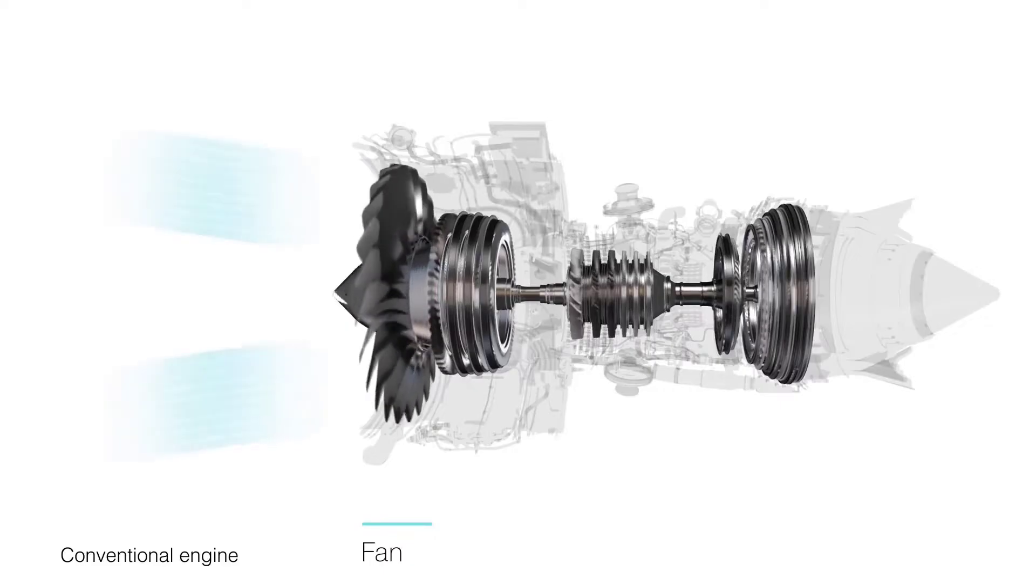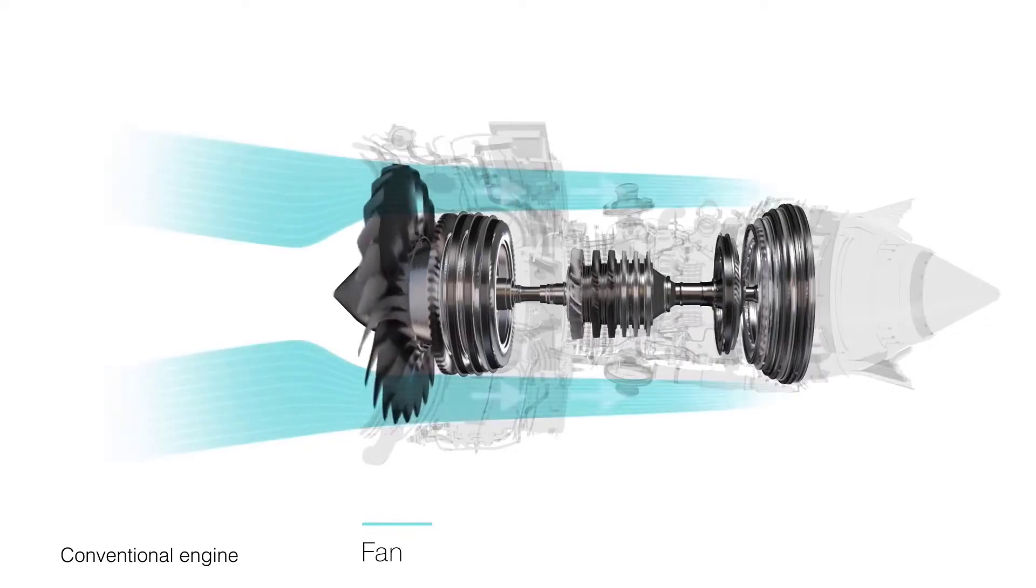The fan produces most of the thrust in the engine, and it uses air that bypasses the engine core to produce that thrust.